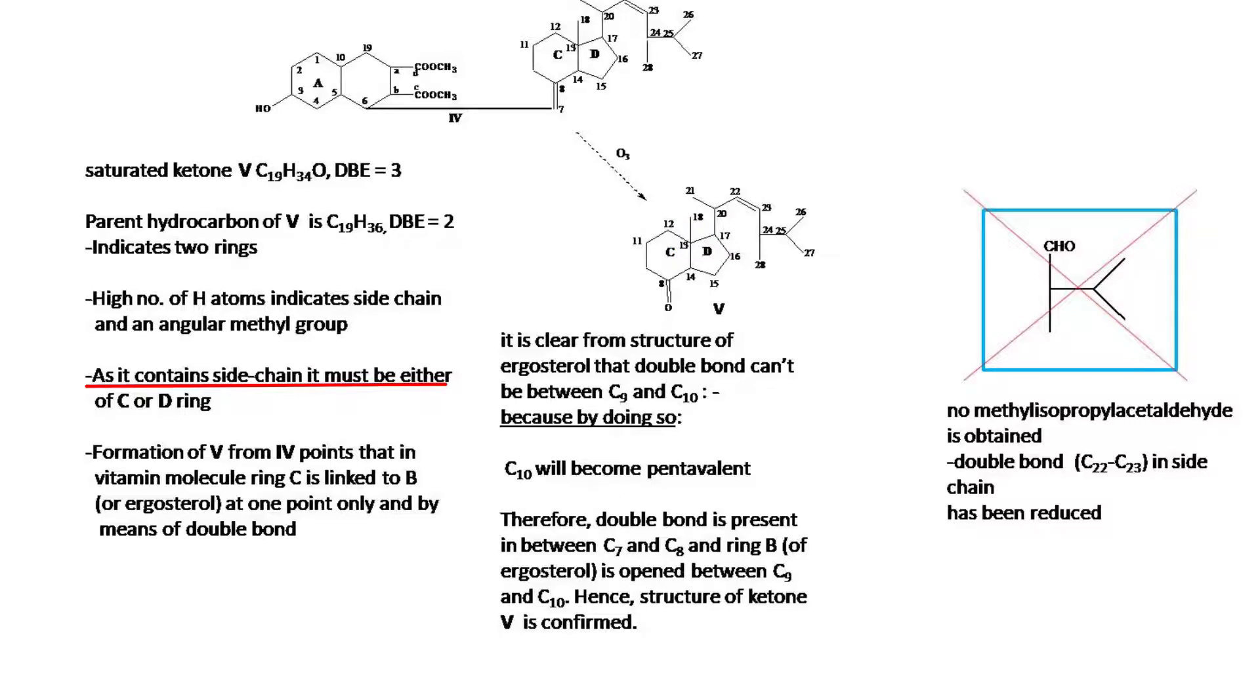As it contains a side chain, it must be either C or D ring. Formation of fifth from four points indicates that in the vitamin molecule, ring C is linked to B of ergosterol at one point only, and by means of a double bond.